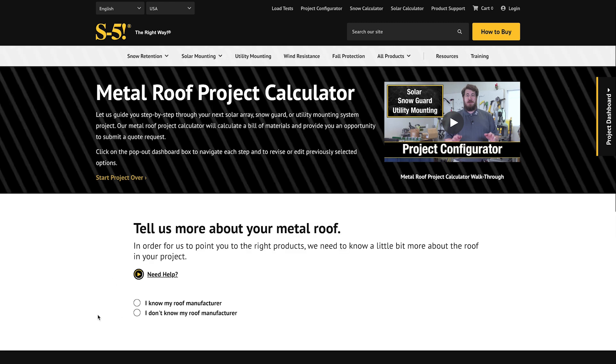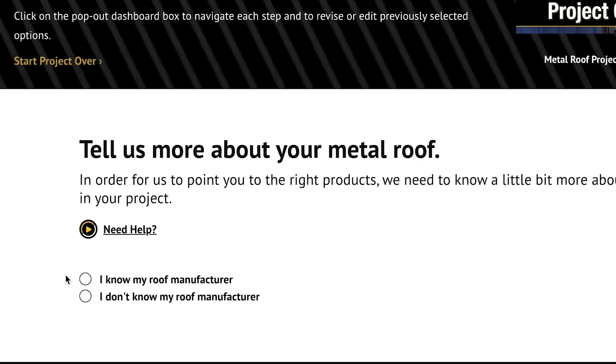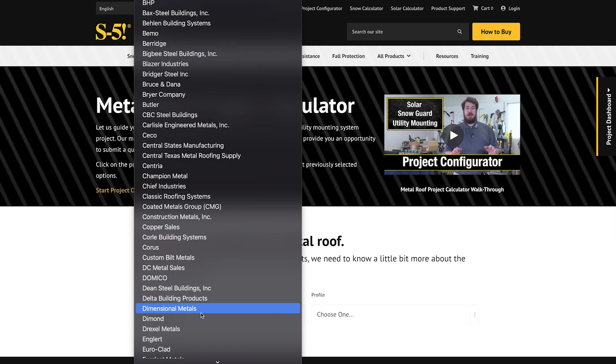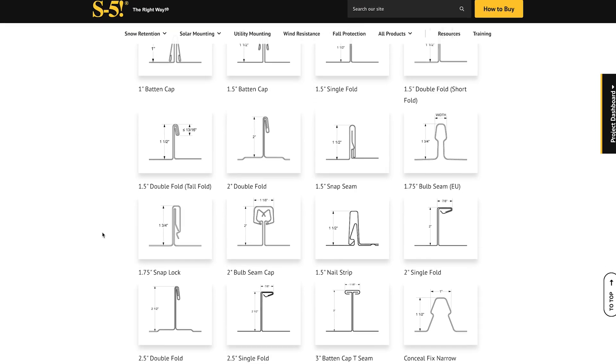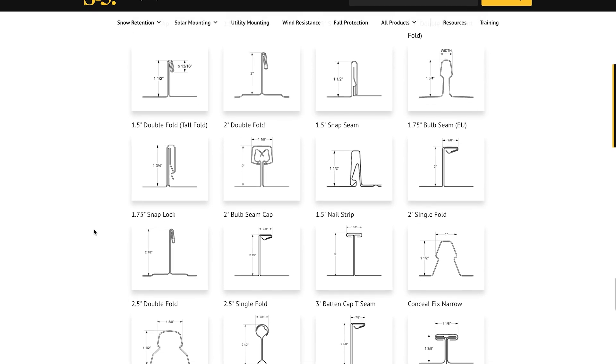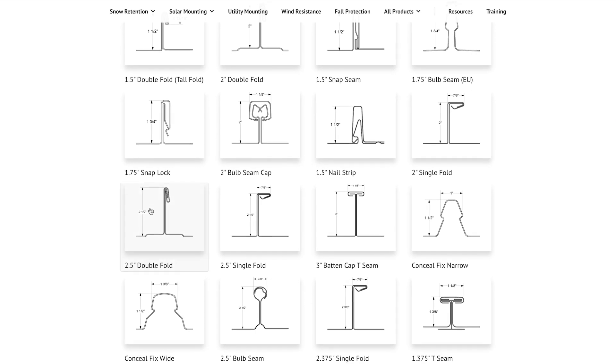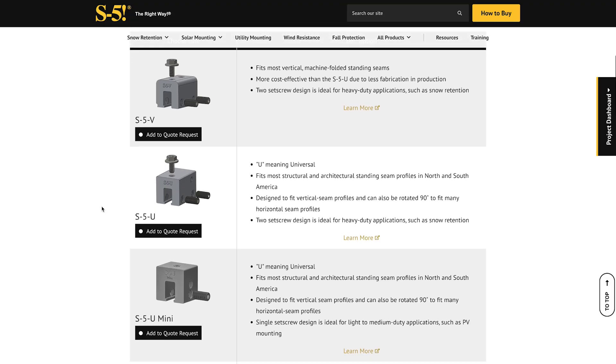For standing seam roofs, you'll then be asked whether you know the manufacturer of your roof. In this case, we're going to select I know my roof manufacturer. If you don't know, you'll be taken to a list of profile types where you can choose the one that most closely matches the panel you're working with to see which clamp options are available to you.